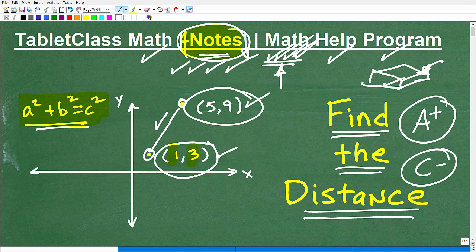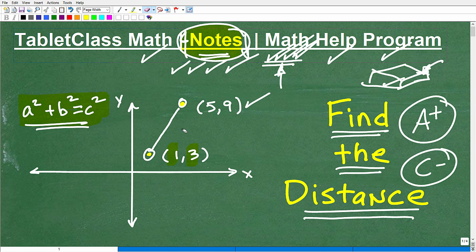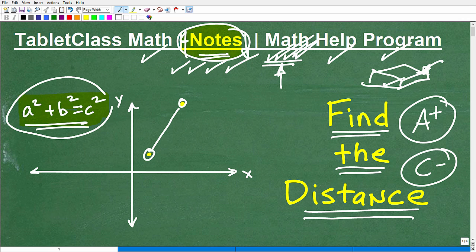All right, so let's get back to this problem. I just want to show you very briefly how we can determine the distance between these two coordinates. Again, if you know how to do this, go ahead and write these coordinates down. I'm going to erase this here, and then I'm going to show you the distance formula. The coordinates are (1, 3) and (5, 9). The distance formula comes from this formula, and that's the Pythagorean theorem.